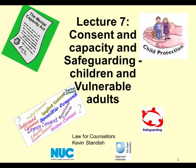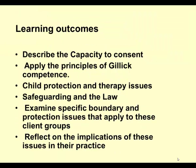What we've covered on the Terrorism Act data, criminal crime, safeguarding and all those sorts of things is more than enough of what you need to know. We're going to move on. What we're going to look at is capacity to consent, Gillick competence, child protection, safeguarding, and any particular boundary issues that you need to think about.